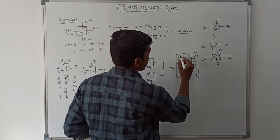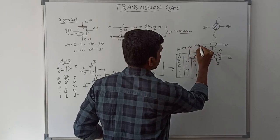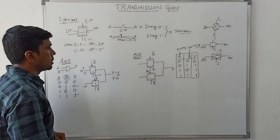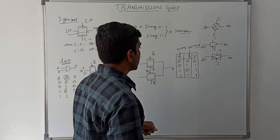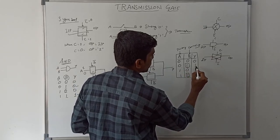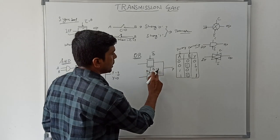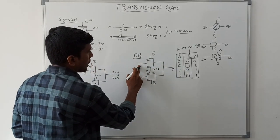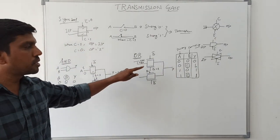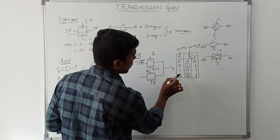In this truth table we have two variables: A is the primary input and B is the controlling input. When B equals 1, for A equal to 0 the output is 1, and for A equal to 1 the output is 1. So whenever B equals 1, the first transistor is connected to VDD, which is plus 5 volts representing logic 1. This logic 1 is transferred to the output side, so irrespective of A value, when B equals 1, output is always 1.